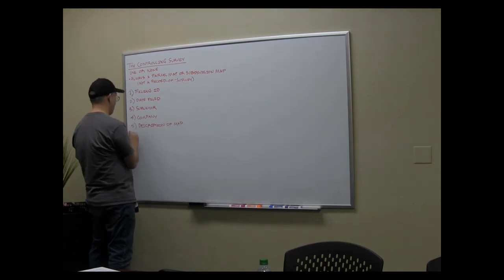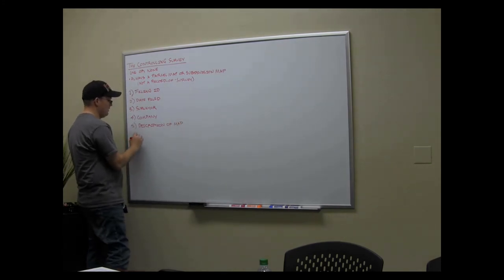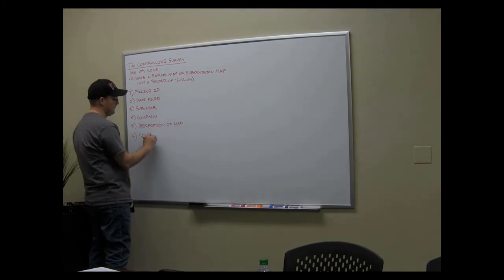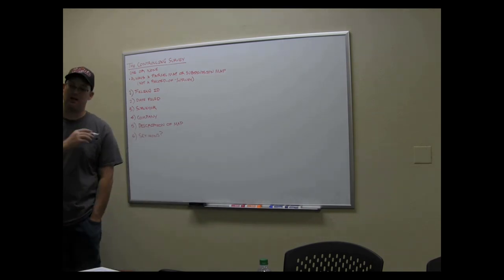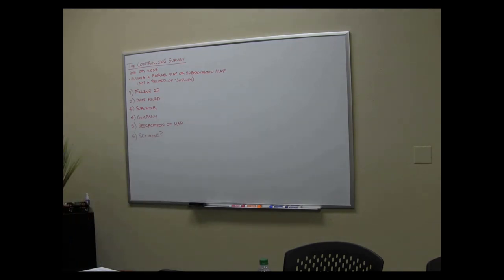Description of what happened on the map. It's also, if you want, it's helpful here to tell me, were there any monuments set on the map? Because that's going to become important later on. So, you just say, no monuments set at the map or map only set centerline monuments, no monuments set on block corners. Something. When you do your first one, come get me. We'll look at the map. We'll figure out what to write.